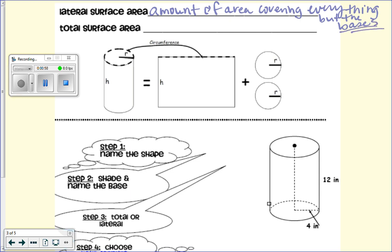And the total surface area is total amount of area to cover a 3D solid or a net.